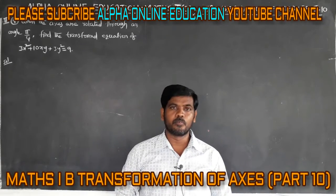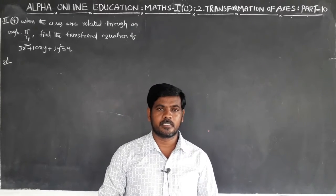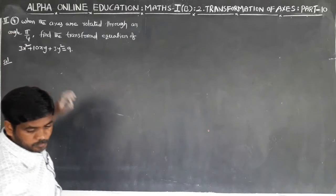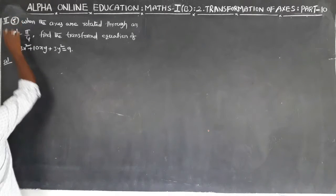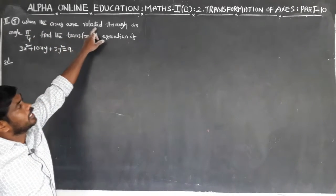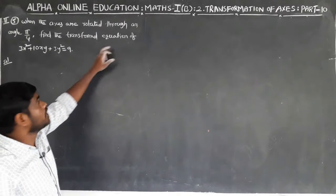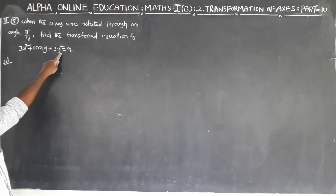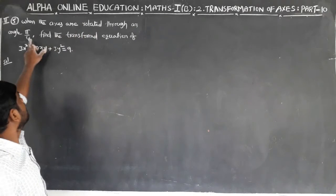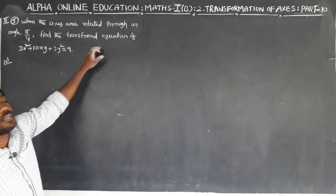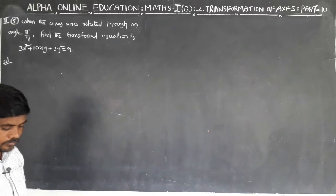One of the most important problems, the foremost question of the second chapter on transformation of axes. This is the fifth problem: when the axes are rotated through an angle of π/4 radians, find the transformed equation of 3x² + 10xy + 3y² = 9.